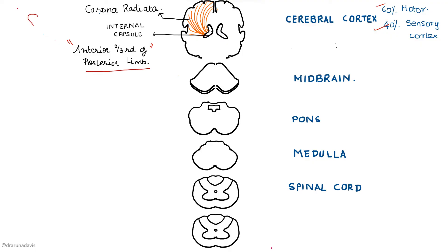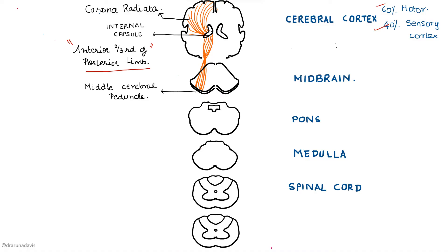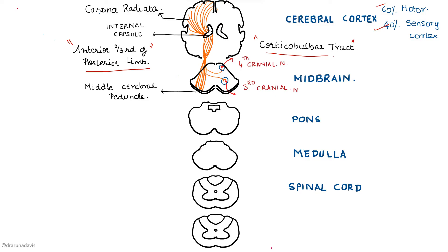After passing through the internal capsule, the fibers go down into the midbrain through the middle cerebral peduncle. These fibers also send out some branches to the cranial nerve nuclei — such fibers are called the corticobulbar tract. The corticobulbar tract is a part of the corticospinal tract. The fibers then descend into the pons, where they are scattered by the pontine nuclei. In the pons, the corticobulbar tract also gives off fibers to the sixth and seventh cranial nerves.